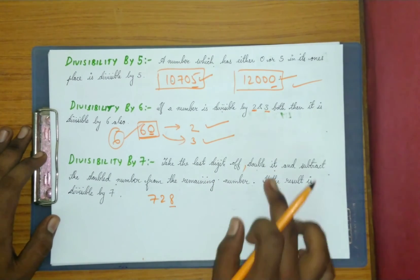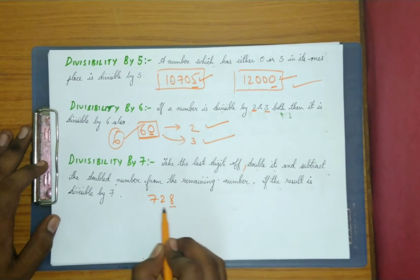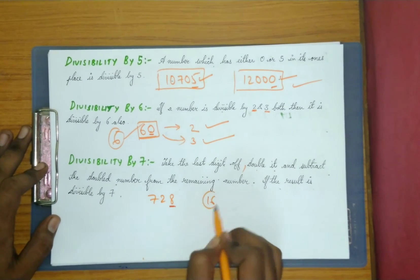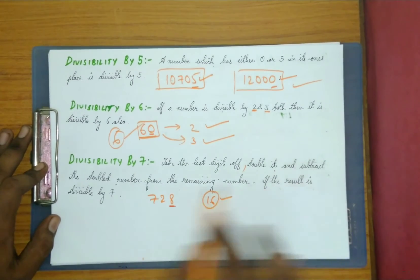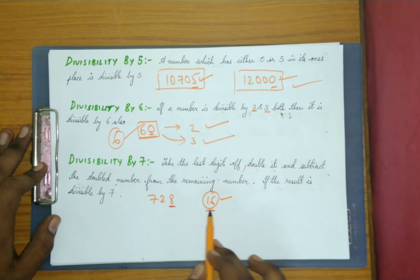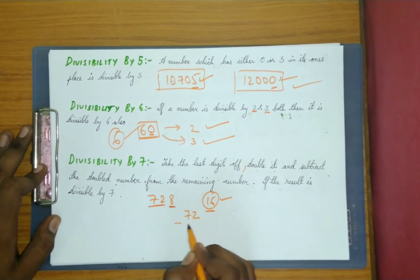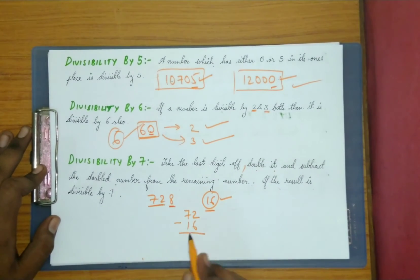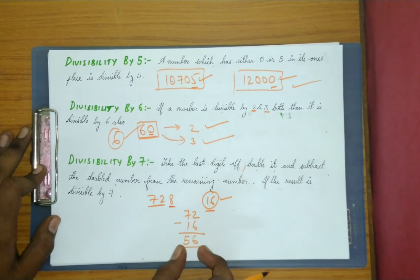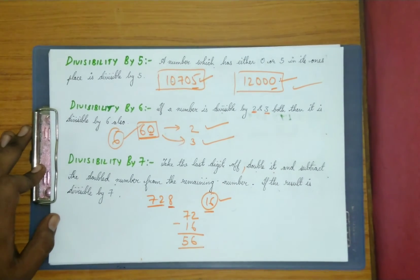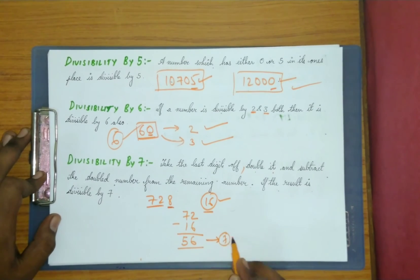Let's take the example 728. Take the last digit, which is 8, remove it, and double it: 8 times 2 is 16. Now subtract the doubled number 16 from the remaining number 72: 72 minus 16 equals 56. Check whether 56 is divisible by 7 — yes, it is divisible by 7.